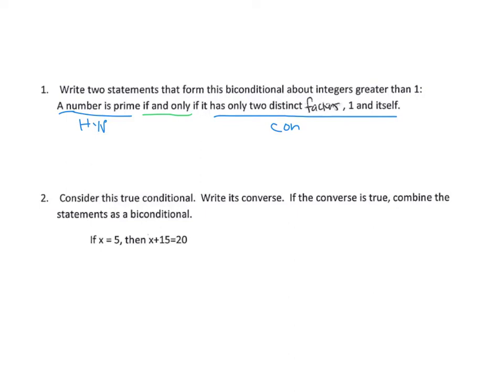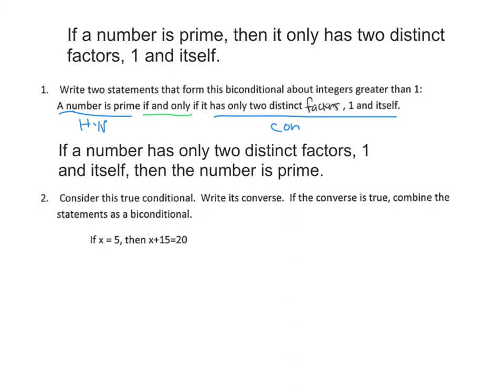The first statement: if a number is prime, then it has only two distinct factors, one and itself. The second: if a number has only two distinct factors, one and itself, then the number is prime. Make sure to say 'if the number' rather than 'if it' so the subject is clear.